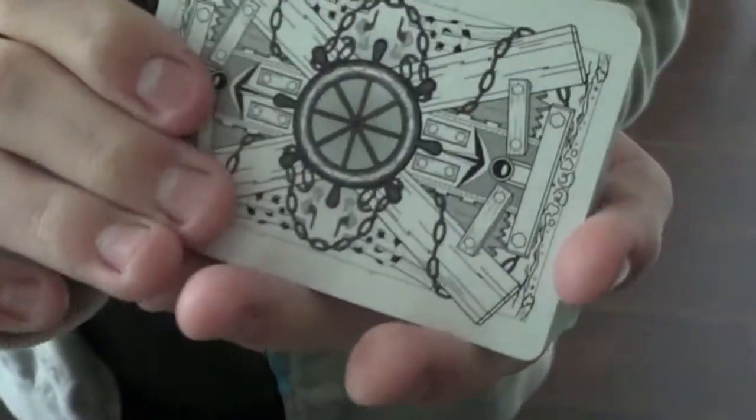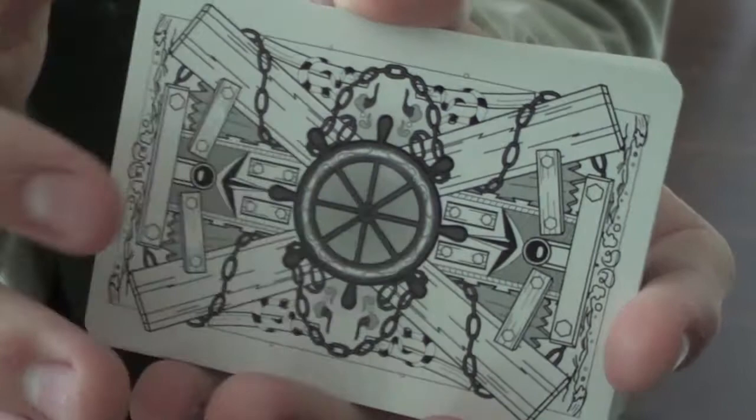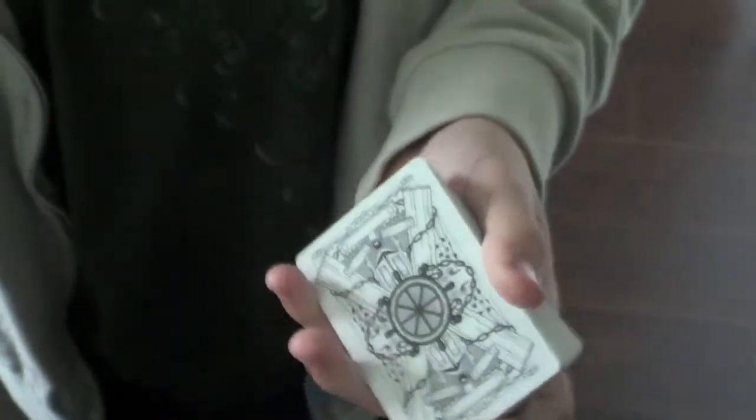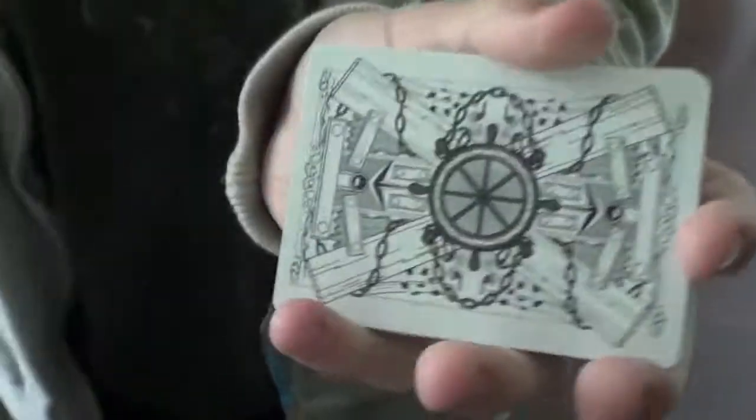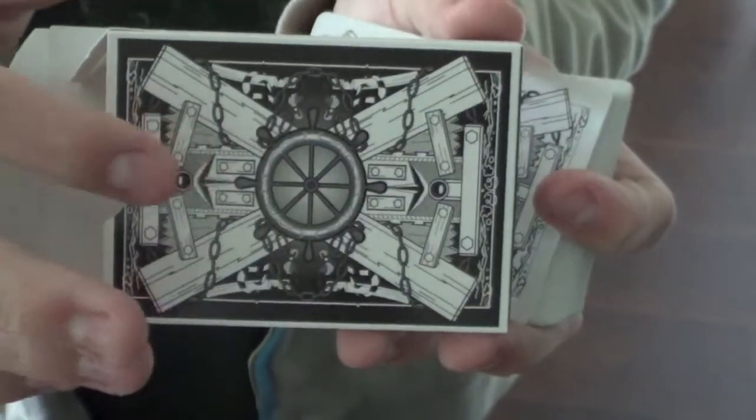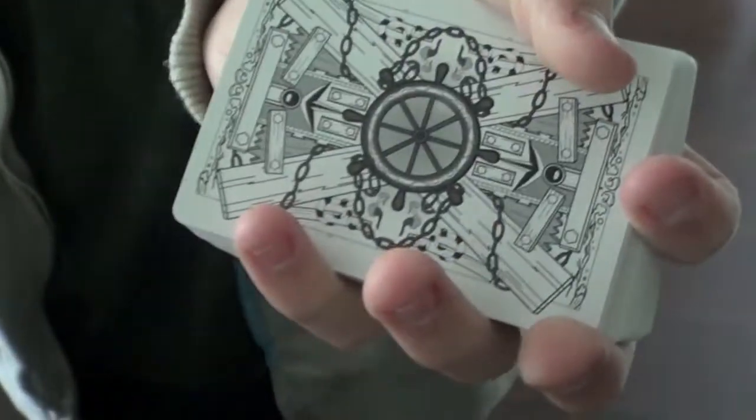This deck has a very attractive back design. I really like the wheel in the middle and the chains around it. On the box it's white on black, whereas on the cards it's black on white. I like the version on the box a little bit more, but this version still looks very good.